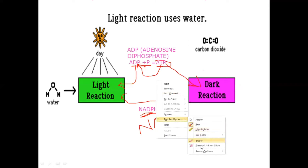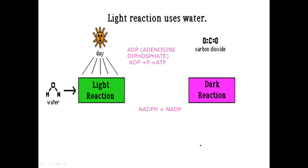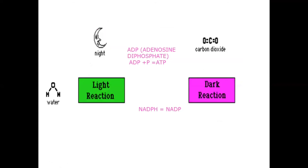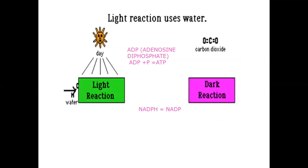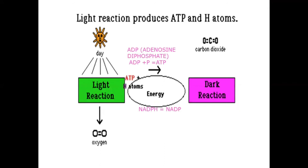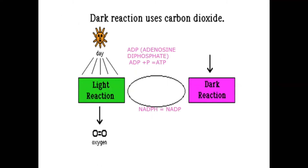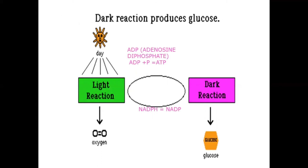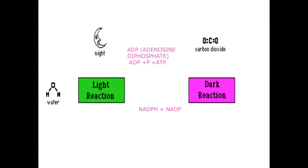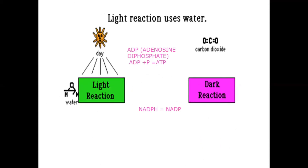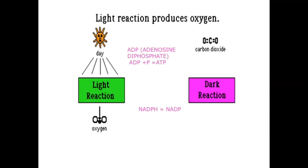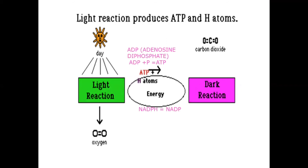Let me play the animation again so things become clear. You can see water breaking down, giving oxygen. ATP goes to dark reaction and comes back as ADP to light reaction. Carbon dioxide comes into dark reaction and gets converted to glucose. This is what light reaction and dark reaction are all about.